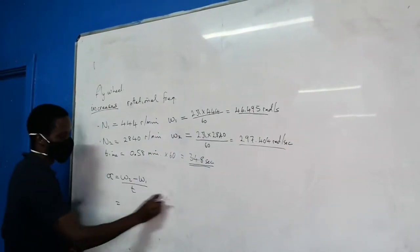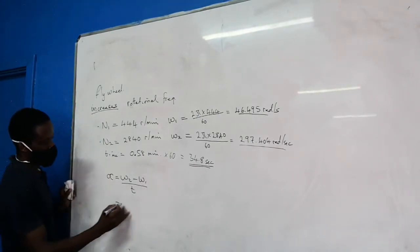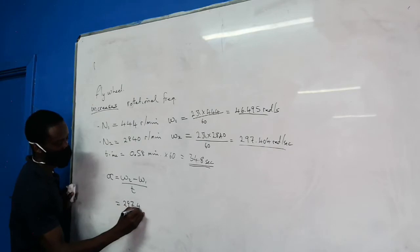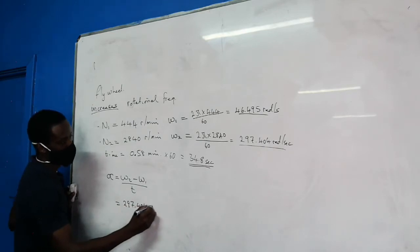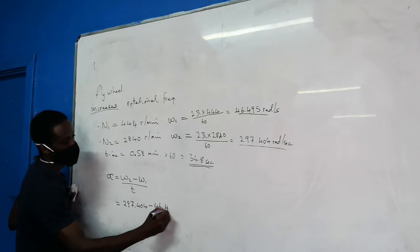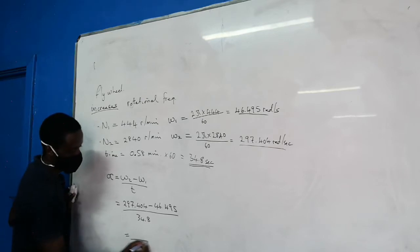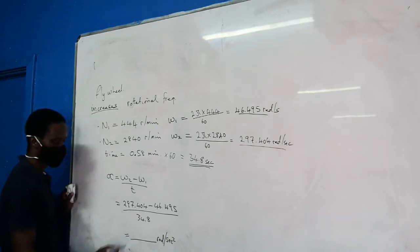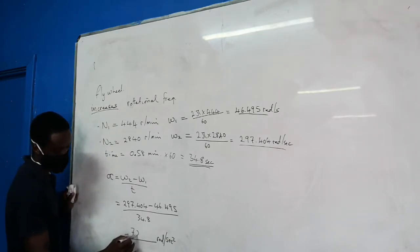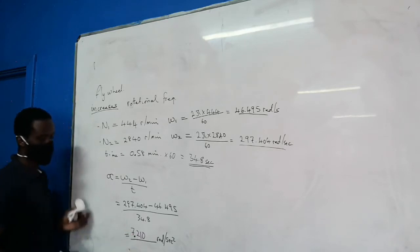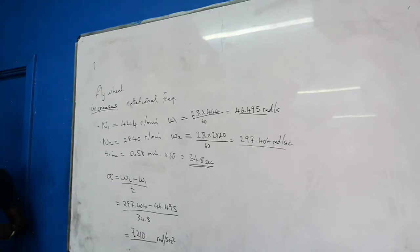So in your calculations, now we can replace those values. 297.44 minus 46.495 over 34.8. What we will get is radians per second squared, 7.210. This is change in angular velocity.